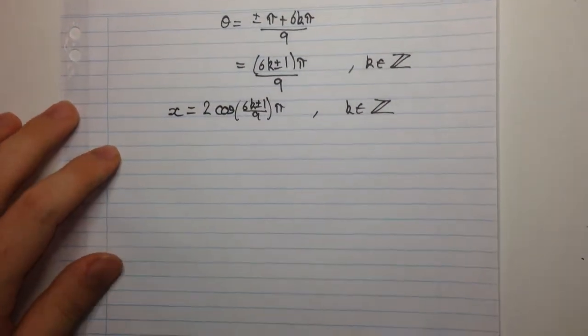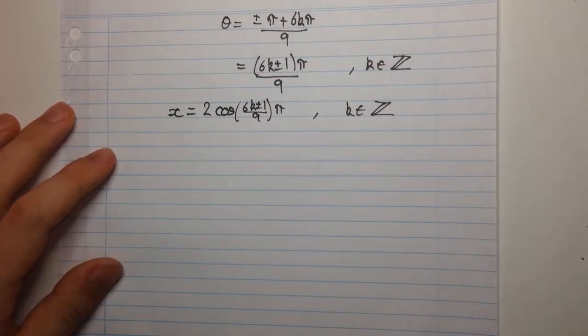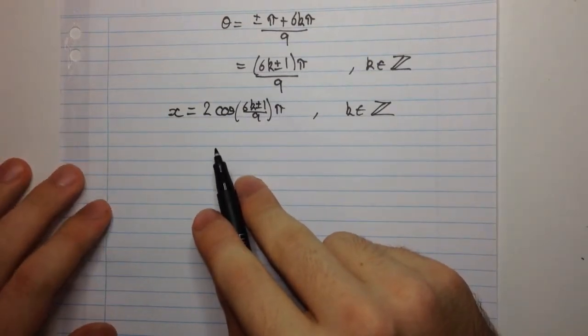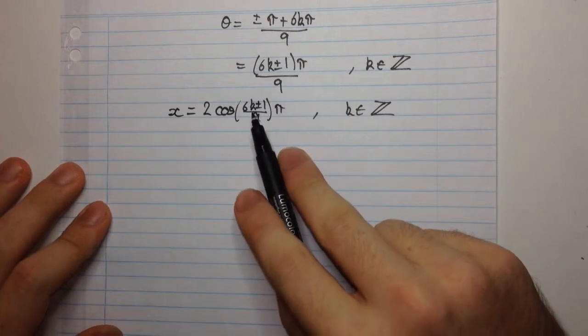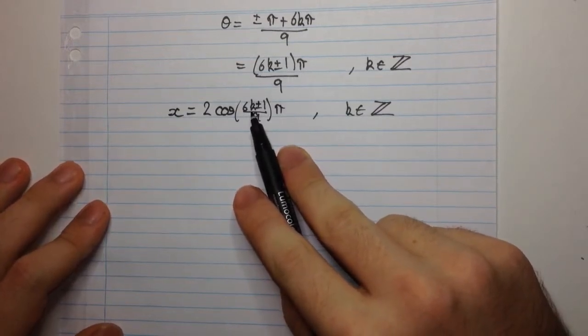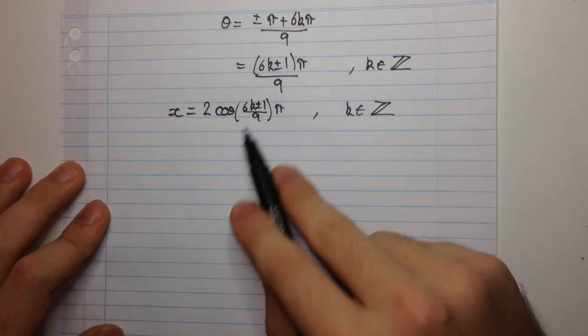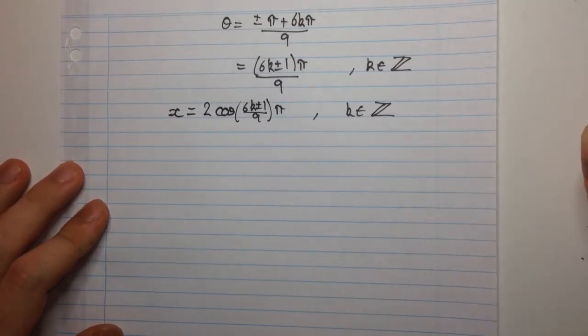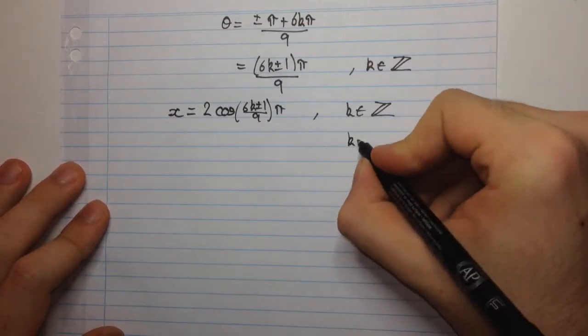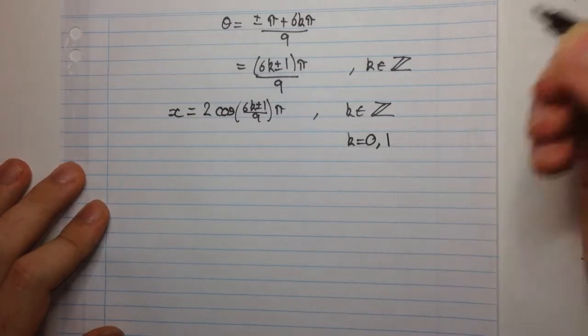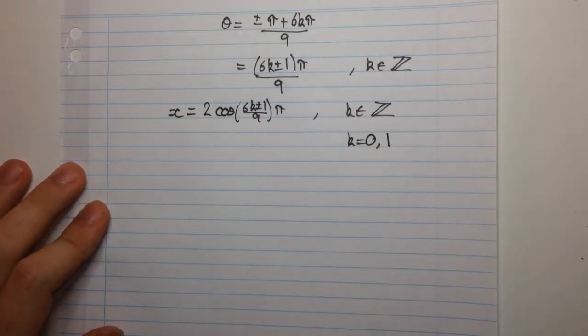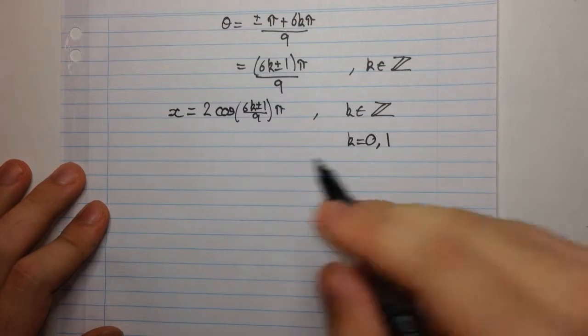So, we're going to have 6k plus or minus 1 over 9 times π, where k is an integer. Now, we need 3 solutions. And you can see, for every integer value, every value that you put in, you're going to get 2 solutions because we have this plus or minus here. So, the obvious things to choose would be k equal to 0 and 1. These are the two simplest numbers to substitute into this.